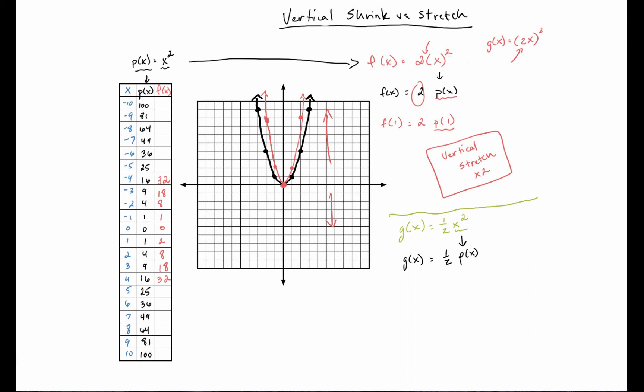So in this case with g of x, if our normal output was at one, our new output is going to be at one half. If our normal output was at four, we're going to be down here at two. If our normal output was at nine, then we're going to be down here at four and a half. And same thing over here.